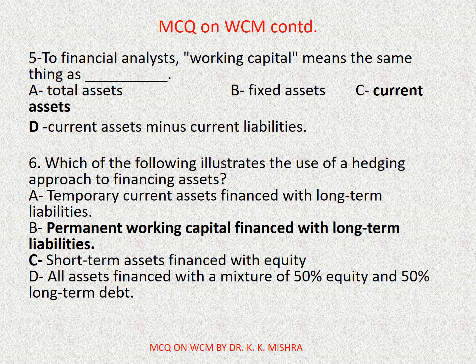Question number six: which of the following illustrates the use of a hedging approach to financing assets? Options are: A) Temporary Current Assets financed with Long-Term Liabilities, B) Permanent Working Capital financed with Long-Term Liabilities, C) Short-Term Assets financed with Equity, D) All Assets financed with a mixture of 50% equity and 50% Long-Term Debt. Correct option is B: Permanent Working Capital financed with Long-Term Liabilities. By and large, correct options are highlighted here.